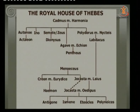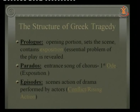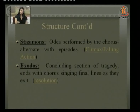The structure of Greek tragedy begins with the Prologue — the opening portion that sets the stage and contains exposition, revealing something. Then the Parodos is the entrance song of the chorus, again expository. Then Episodes — scene by scene actions with conflict and rising action. Stasima are odes performed by the chorus alternating with episodes, where the climax and falling action occur. Finally the Exodus concludes with the chorus singing final lines as they exit — a kind of resolution.